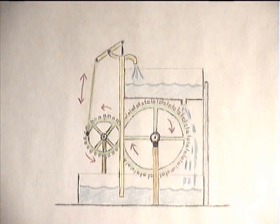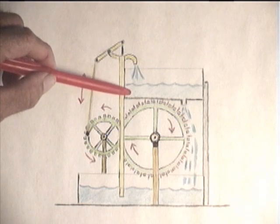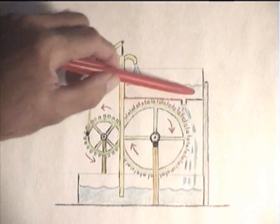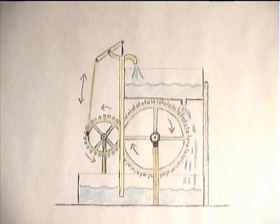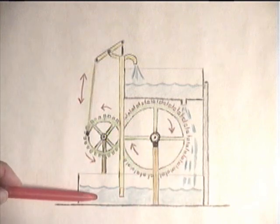Say the top tank holds one gallon of water, which is eight pints. To get the device going, you have to use X amount of energy to lift that one gallon of water into the top tank. When the device operates, one gallon of water falls down onto the wheel and then into the bottom tank.